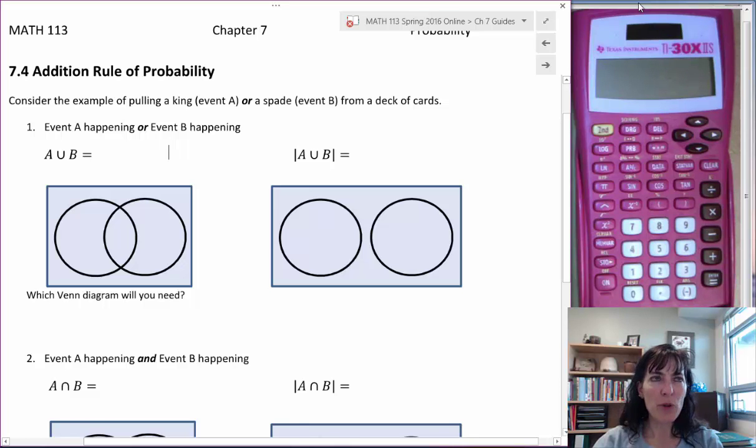Consider an example of pulling a king, which we'll call event A, or pulling a spade, which we'll call event B, from a deck of cards.